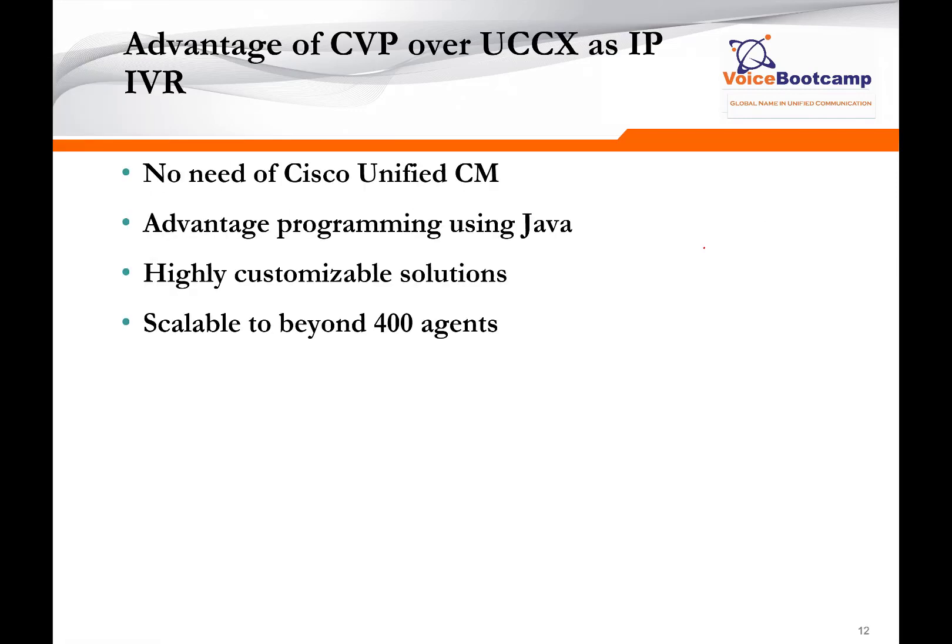One advantage of using CVP as an IP-based IVR platform over UCCX is that you don't need call manager for CVP to work — for UCCX, you do need call manager. You can use advanced Java programming within CVP. It's a highly customizable solution because you can create your own plugin and import it into your project. And it is scalable beyond the 4,400 agent limit that UCCX is restricted to. That's pretty much the overview of our CVP server — I'll see you in chapter two.